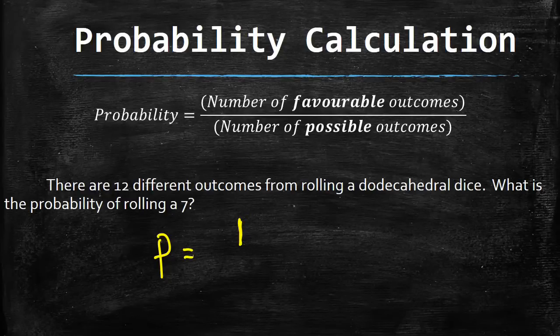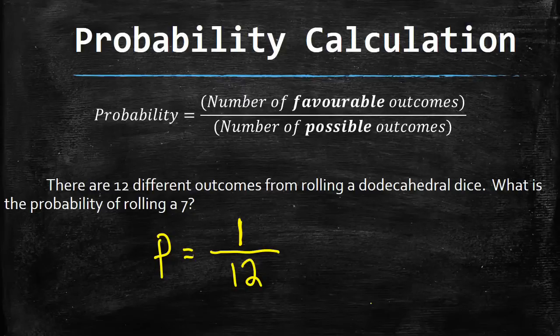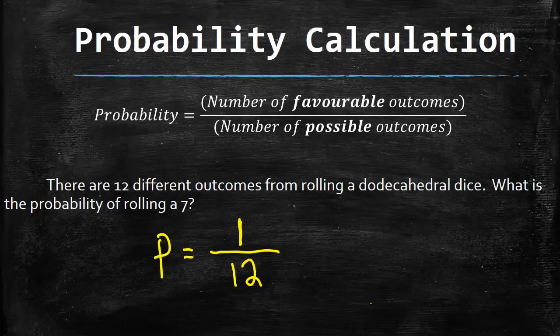is equal to 1 - this is our one way to get a favorable outcome - divided by 12. I can leave it just like this, or turn it into a decimal or percentage if I want. Usually it will be specified in the question what we're looking for.